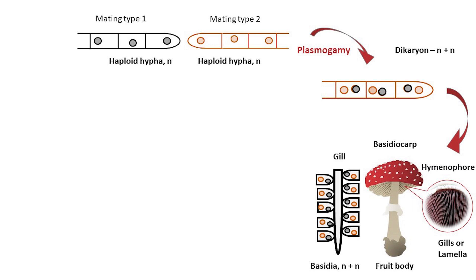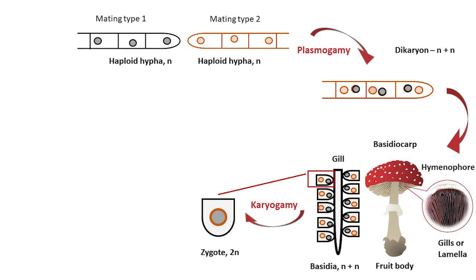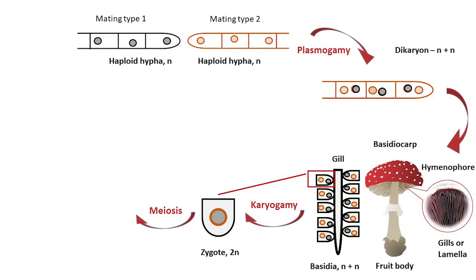Karyogamy is the next step in the sexual reproduction of fungi. At this stage, two haploid nuclei fuse, creating a zygote. In most fungi, the zygote is the only cell in the entire life cycle that is diploid. After this, the zygote is subjected to meiosis. In general, meiosis is a type of nuclear division which results in genetic recombination and produces four daughter haploid nuclei. All nuclei will be genetically different from the parental nuclei — that's why on this illustration I colorized the nuclei differently.